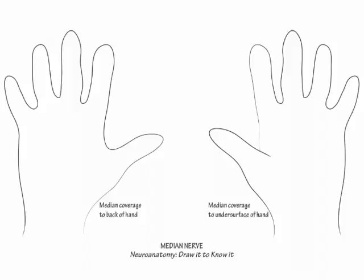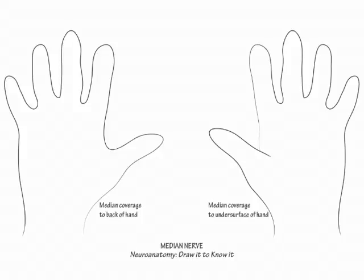Next, let's draw its sensory coverage. On a separate sheet of paper, trace both sides of your hand. On the palm up tracing, square off the ball of the thumb to indicate the sensory coverage of the palmar cutaneous nerve, which is unaffected in carpal tunnel syndrome.